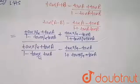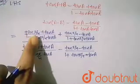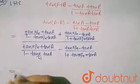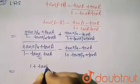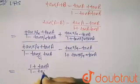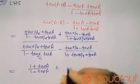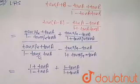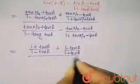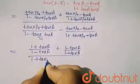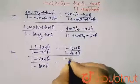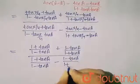Now I will put the value of tan(π/4). We know that tan(π/4), which means tan 45°, is equal to 1. So here I will get [1 + tan a] upon [1 - tan a] in the first part, and [1 - tan a] upon [1 + tan a] in the second part. The full expression becomes {[1 + tan a]/[1 - tan a] + [1 - tan a]/[1 + tan a]} divided by {[1 + tan a]/[1 - tan a] - [1 - tan a]/[1 + tan a]}.